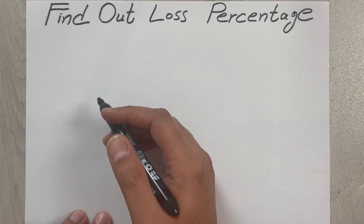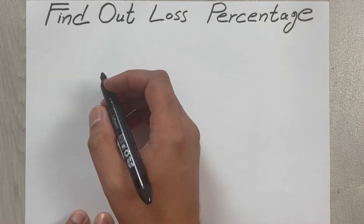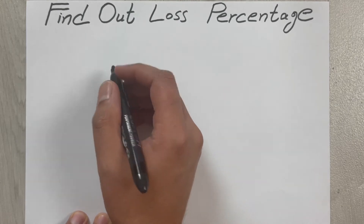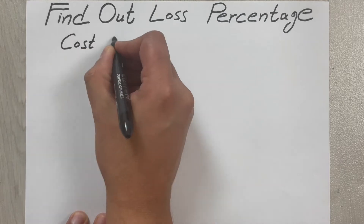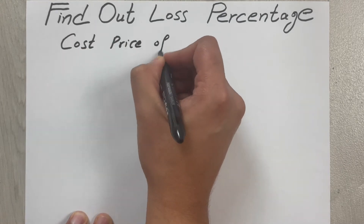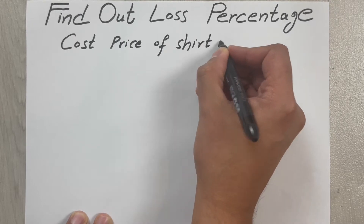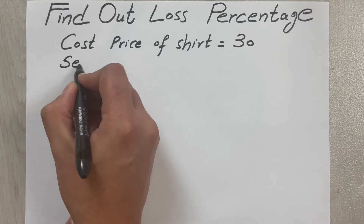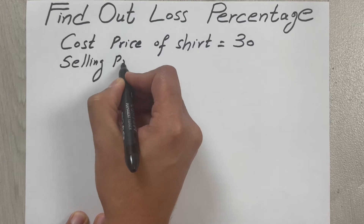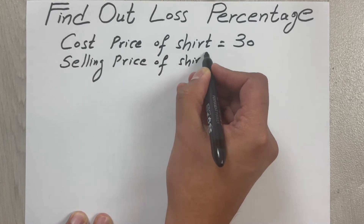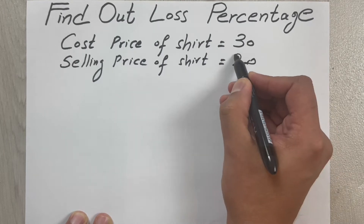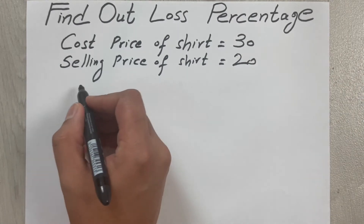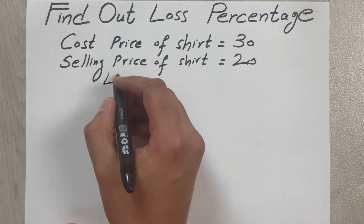Hello guys, I hope you are doing really well. Today I will show you how to calculate the loss percentage. For example, we have a shirt and the cost price of the shirt is 30 rupees or 30 dollars, and the selling price of that shirt is 20 rupees or 20 dollars. You can see the cost price is 30 but the selling price is 20, so we made a loss. Loss equals cost price minus selling price.